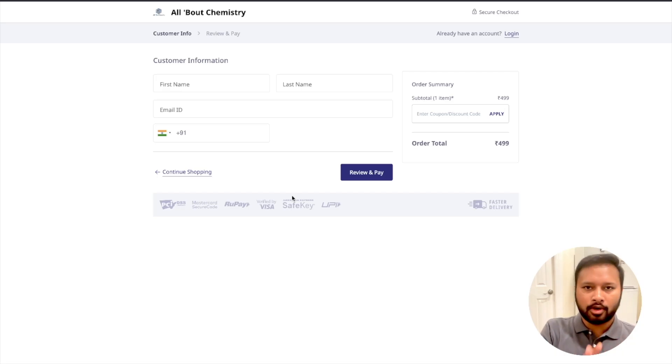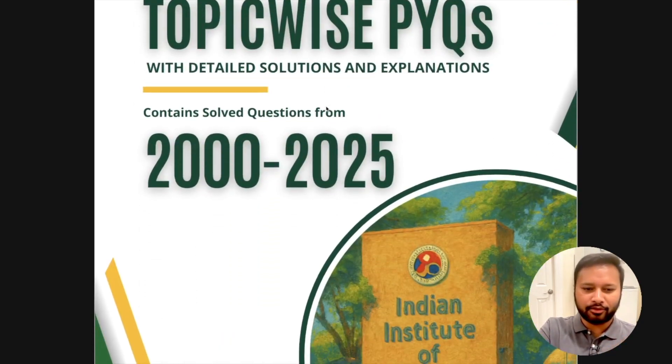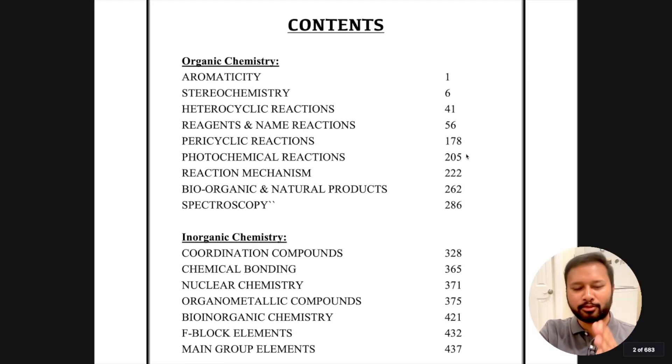Now I'm going to show how the ebook actually looks like. This is the ebook, this is how you are going to get it once you download it. The cover page took a lot of effort to design. These are the contents and the page numbers.